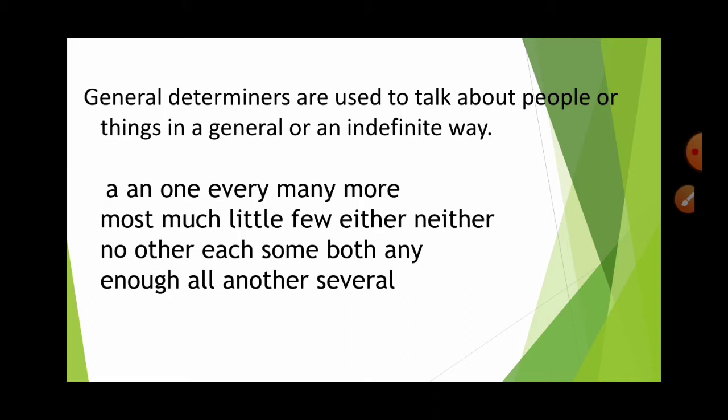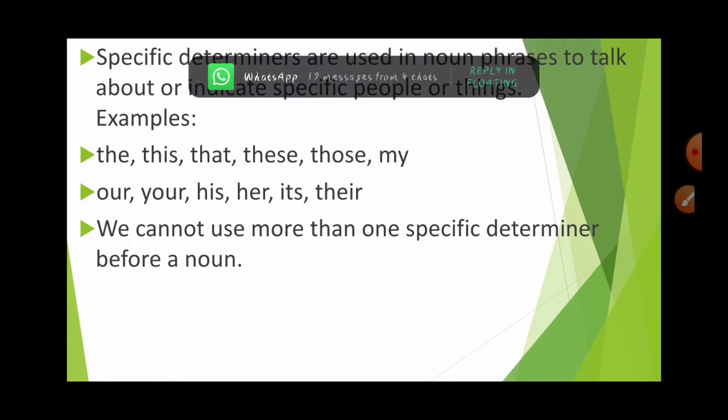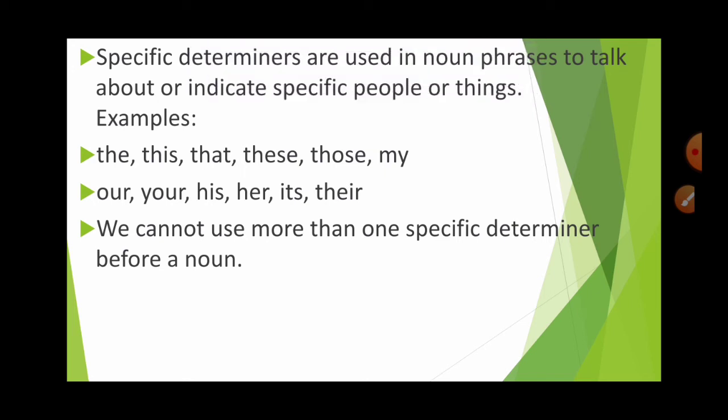Examples of general determiners are: a, an, one, every, many, more, and so on. Specific determiners are used in noun phrases — a phrase being an incomplete sentence — to talk about or indicate a specific person or thing, that is, for a particular person or particular thing.